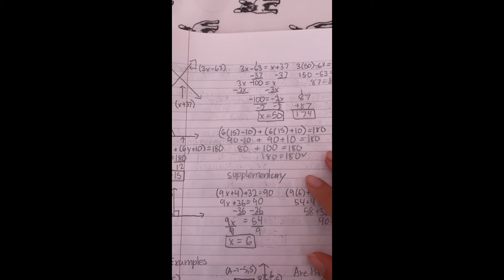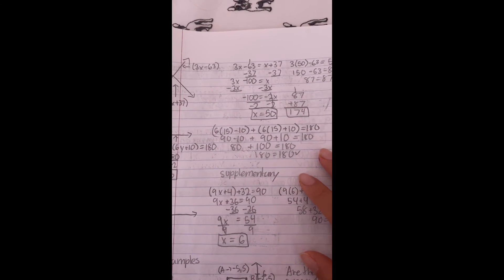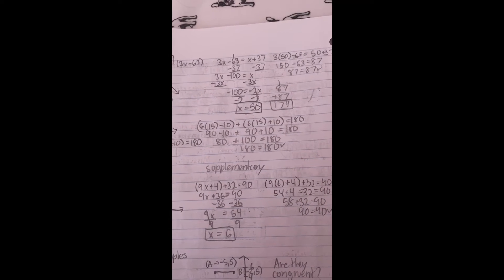3x minus 63 equals x plus 37. Subtract 37 from both sides leads to 3x minus 100 equals x. Negative 100 is equal to negative 2x. Dividing both sides by negative 2 will result in 50.